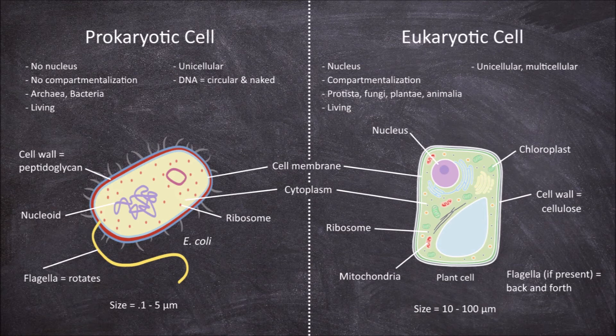The DNA in eukaryotic cells, on the other hand, is linear and is not naked as the DNA is bound to histone proteins. In addition, some prokaryotes can have additional genetic material in the form of plasmids. Eukaryotic cells do not have plasmids.